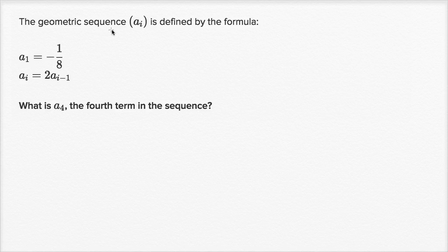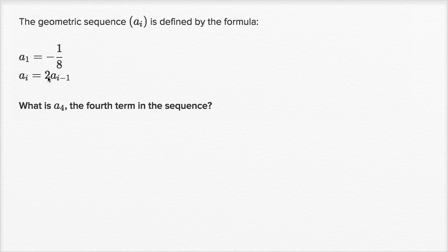The geometric sequence a_i is defined by the formula where the first term a₁ is equal to negative one eighth. Every term after that is defined as a_i equals two times the term before it — so a_i is two times a_{i-1}. What is a₄, the fourth term in the sequence?